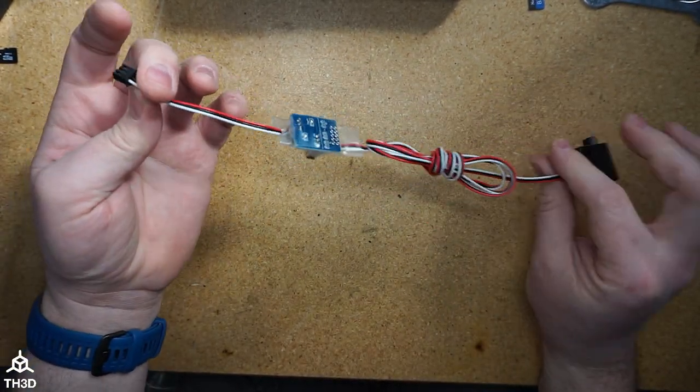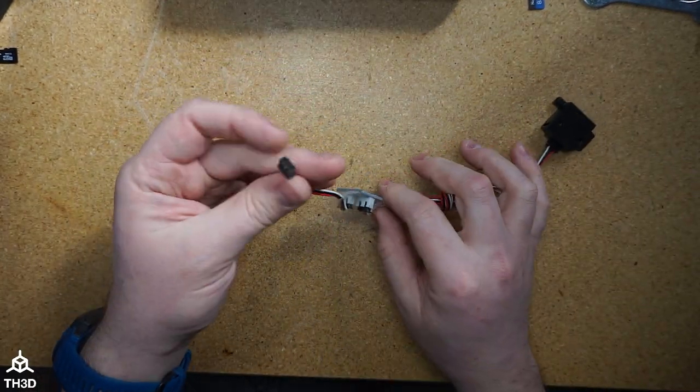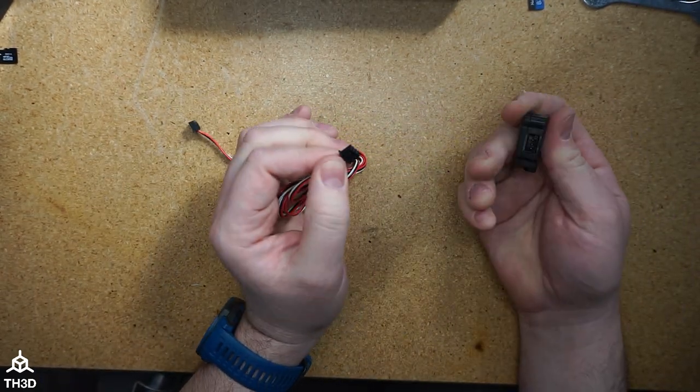And just like that, this is ready to be installed in the printer. Now with the adapter board in line on the cable, we can go ahead and plug this end into the control board, and then the other end with the longer side goes to our sensor.